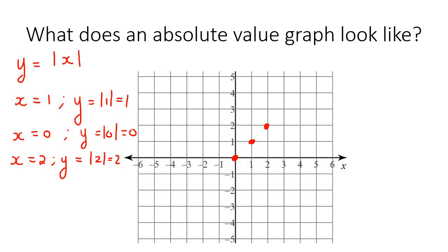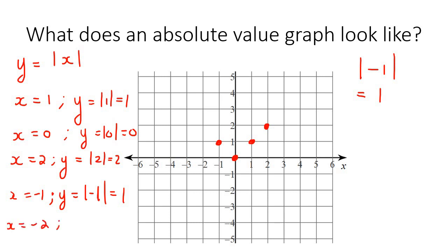What if x is minus 1? The absolute value of minus 1 is positive 1. So if x is minus 1, the y value ends up being 1. Now we're starting to see where the V comes from. If x is minus 2, then y is the absolute value of minus 2, which stays positive. If you keep going, you get this V shape, and connecting everything shows us why absolute values have a V shape.